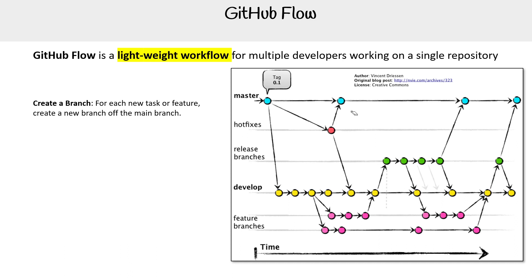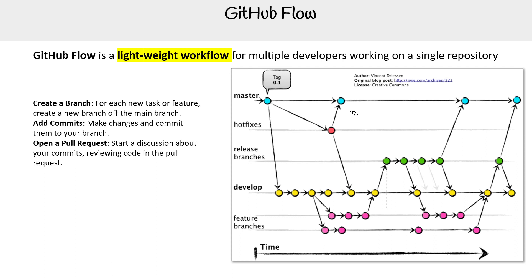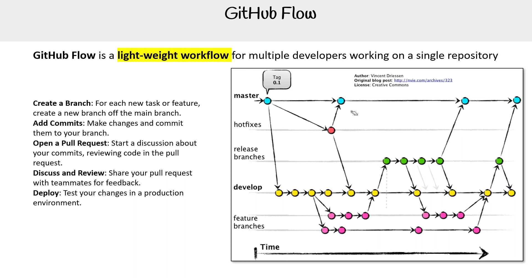Here we'll loosely describe GitHub Flow: you create a branch for each new task or feature — a new branch off the main branch. Add commits by making changes and committing them to your branch. Open a pull request to start a discussion about your commits, reviewing code and getting feedback from teammates. Deploy to test your changes in a production environment. And the last step is merge — once your changes are verified, merge them into the main branch. That's the general concept of it.